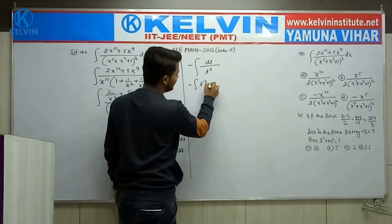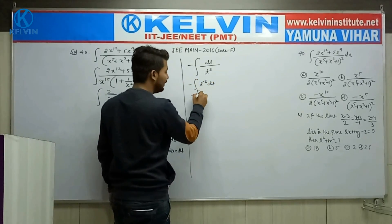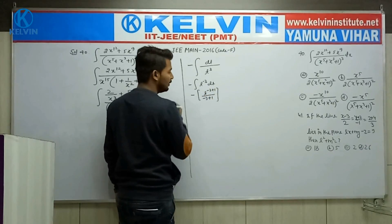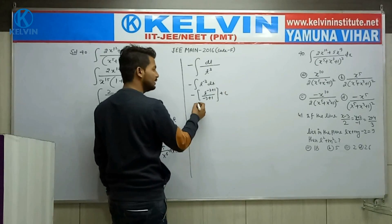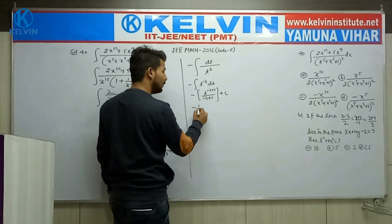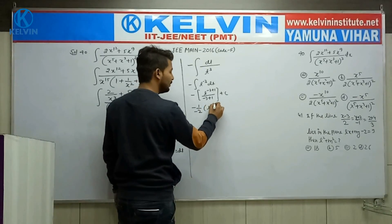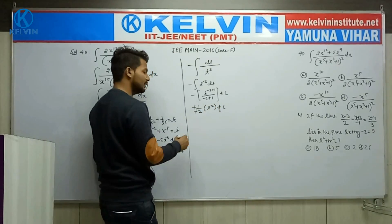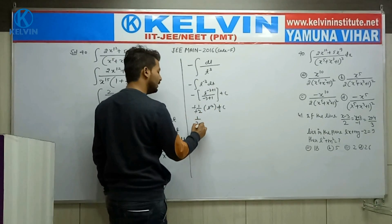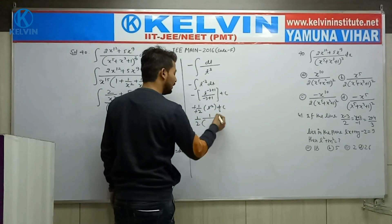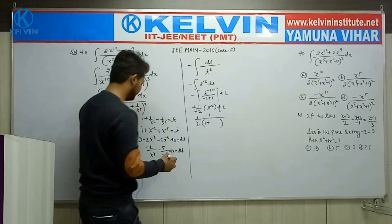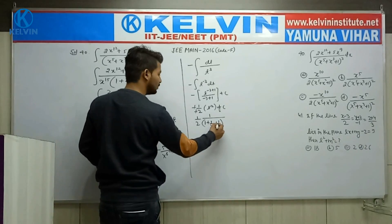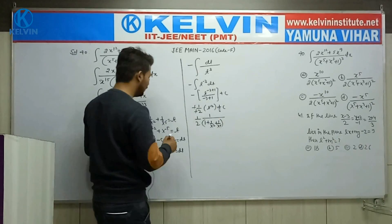This is minus dt upon t to the power 3. And integration gives minus 1 upon minus 2 and this is t to the power minus 2 plus c. Minus and minus cancel out, this is minus 2, this is finally 1 upon 2, like this: 1 upon x square plus 1 upon x to the power 5, and the whole power square.